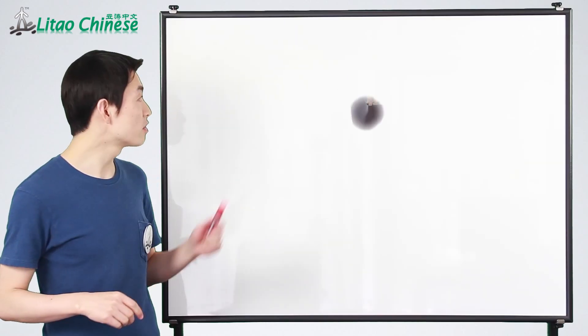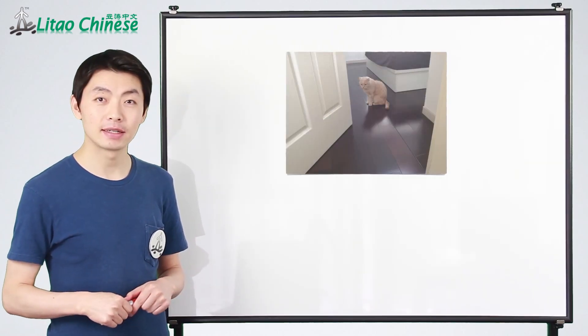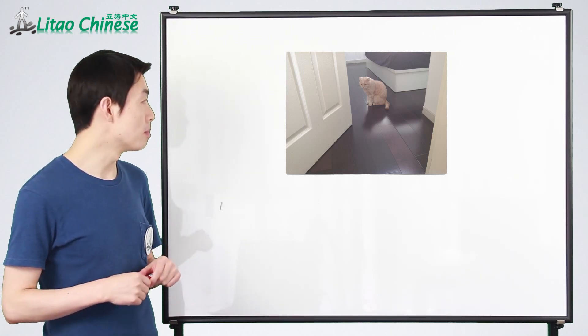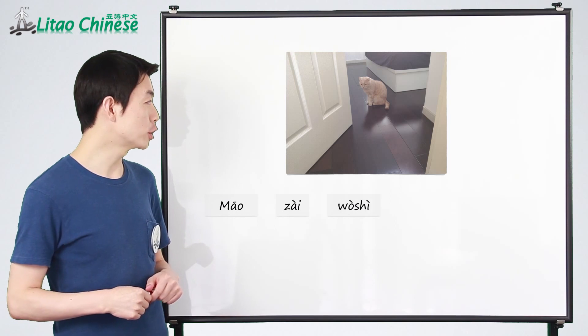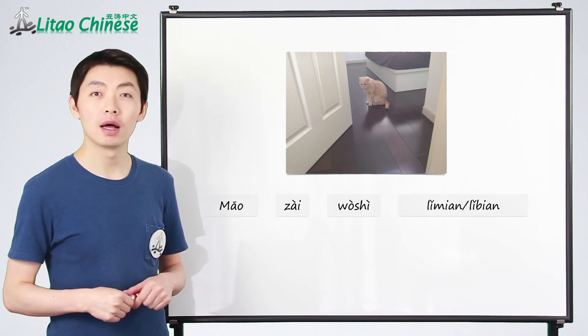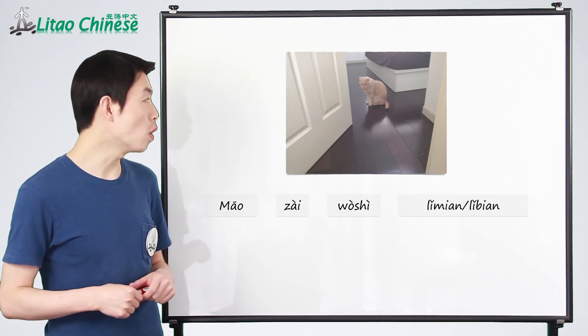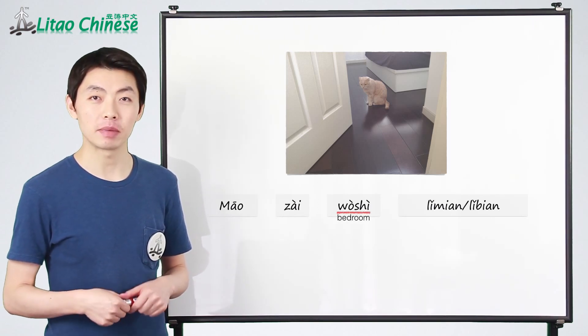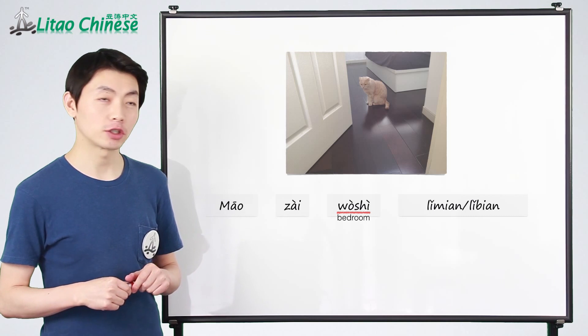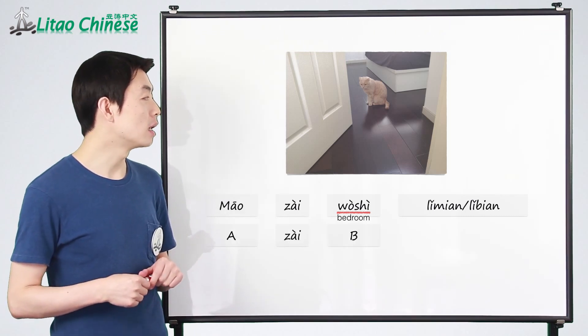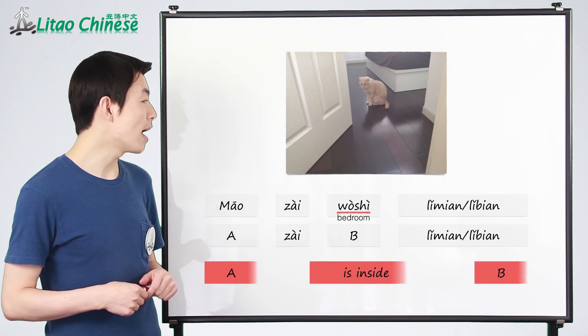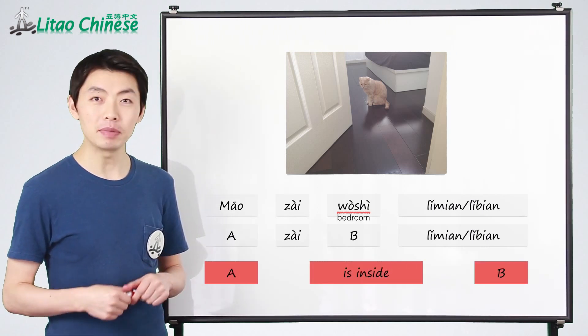In the third picture, the cat is inside the bedroom. We say 猫在卧室里面 or 里边. 卧室 means bedroom. So the structure A zai bi shang mian or 里边 means A is inside B.